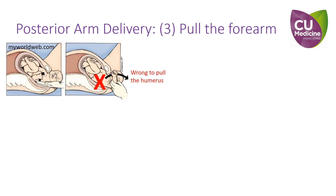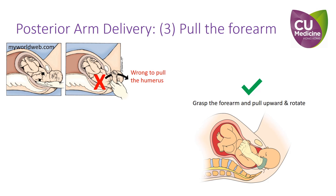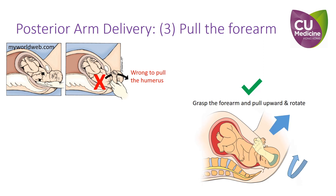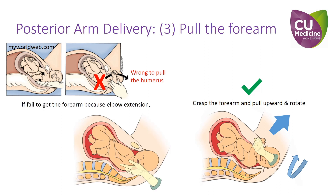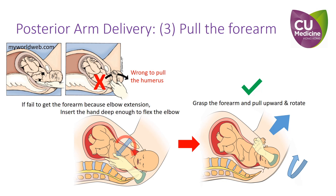The third point to emphasize: it is not advised to pull on the upper arm or the humerus, as it increases failure and fracture risks. You should reach and grasp at the level of the forearm before applying traction and rotation. If the elbow is extended, it can be difficult to reach the forearm. Insert your hand further in, deep enough to reach the elbow, flex the elbow to bring forward the forearm, then grasp the forearm and apply traction and rotation.